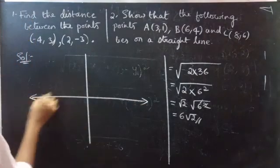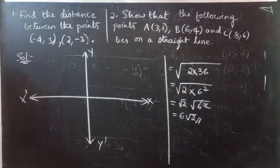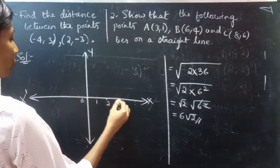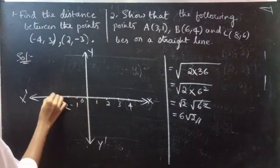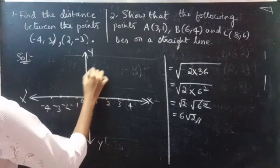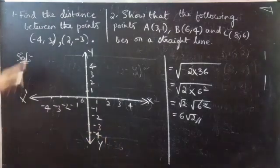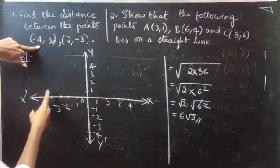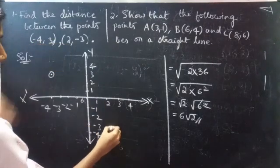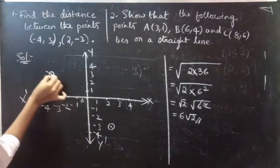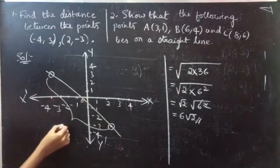We consider two number lines: x, x prime, y, y prime, with origin 0. Plotting integer values along each axis. Now we are going to plot the points. Minus 4 comma 3 lies at this position. Next, 2 comma minus 3 lies at this position. Now join these two points. The distance between these two points is 6 root 2.